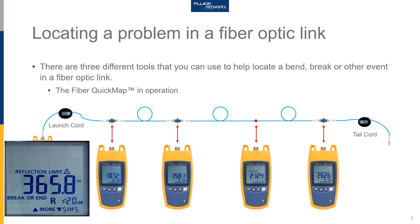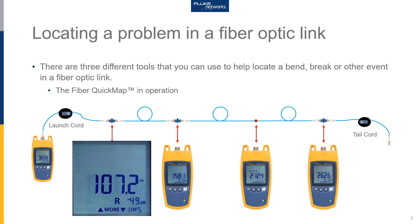Moving along the fiber from the launch point, this is where our launch cord connects to the fiber under test at 107 meters. The R value of minus 49 dB is the reflectance — this is a reflective event. Reflective events indicate that this is most likely a connector. So we have our first connector at 107 meters from the instrument, and this is the first of five events.